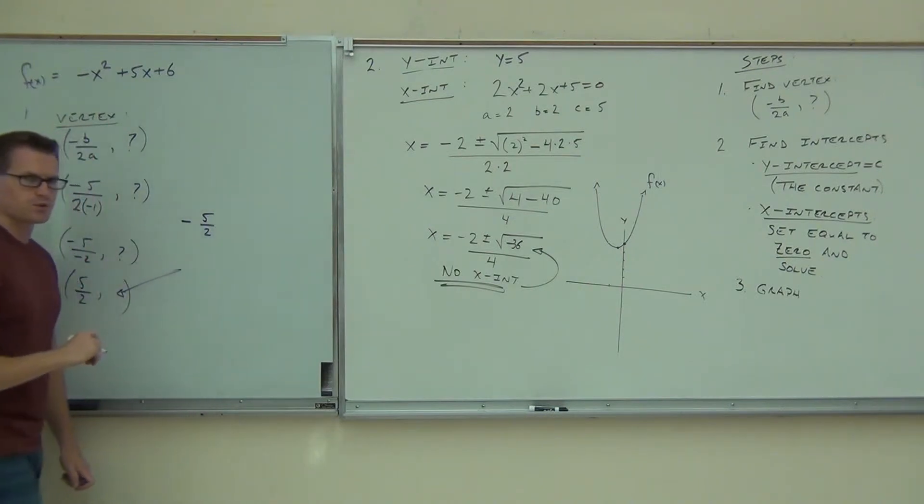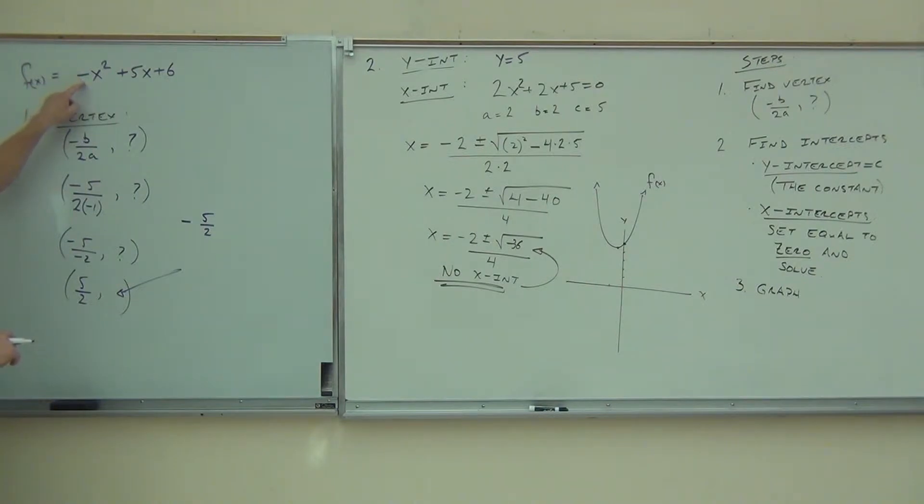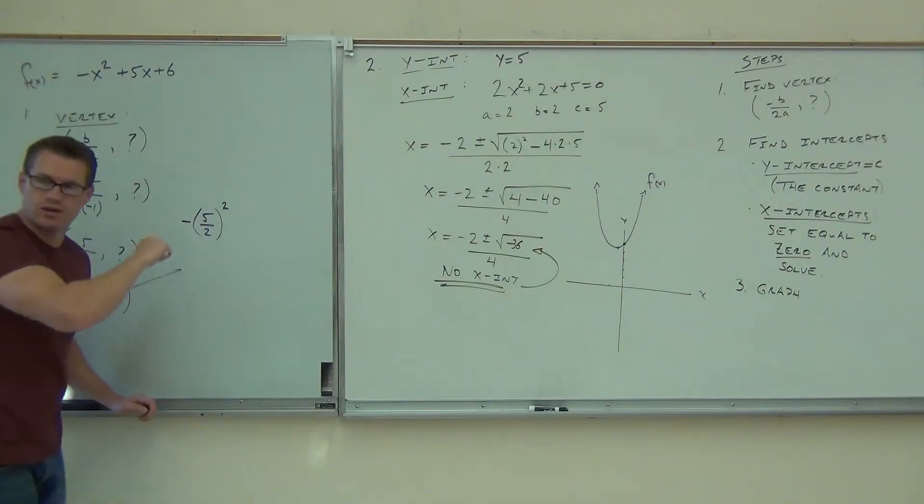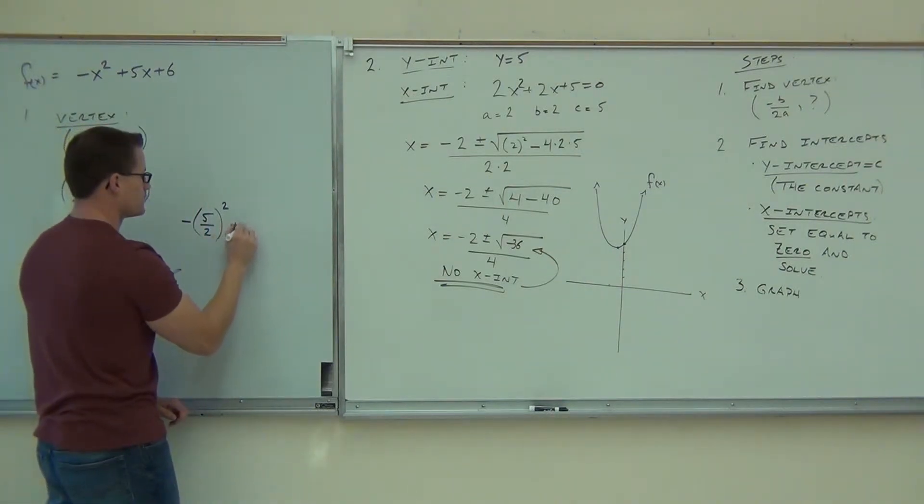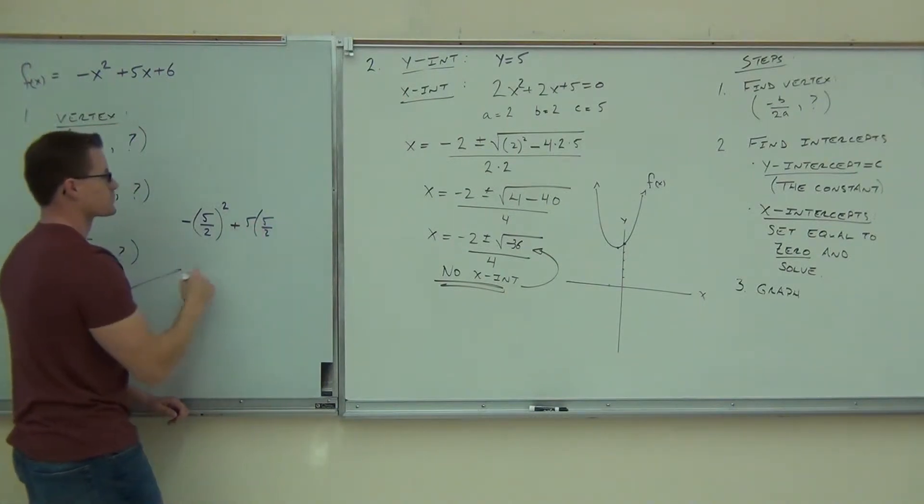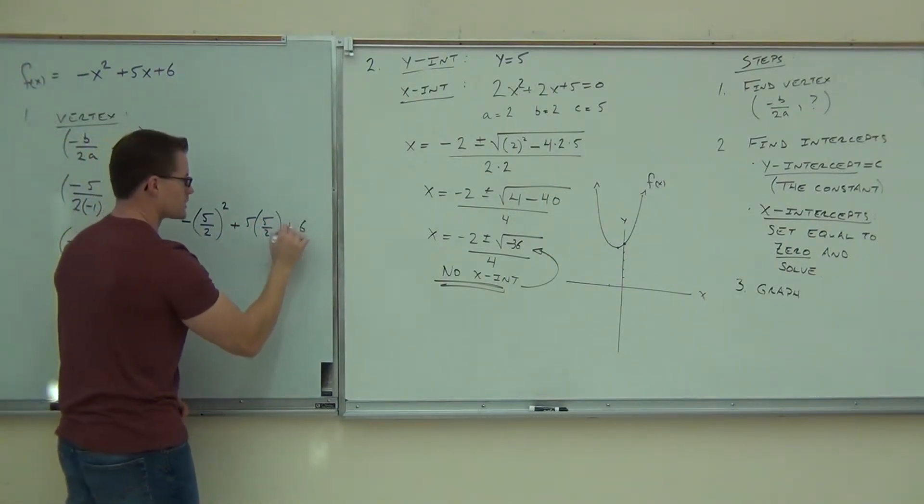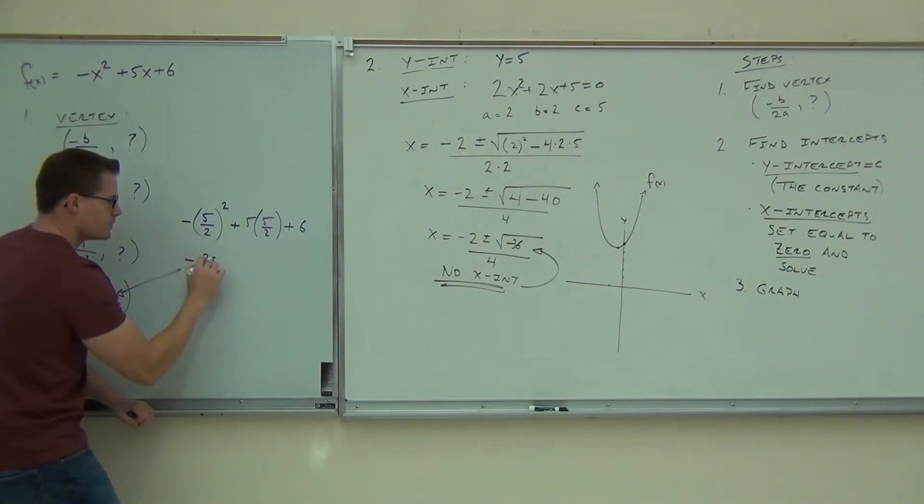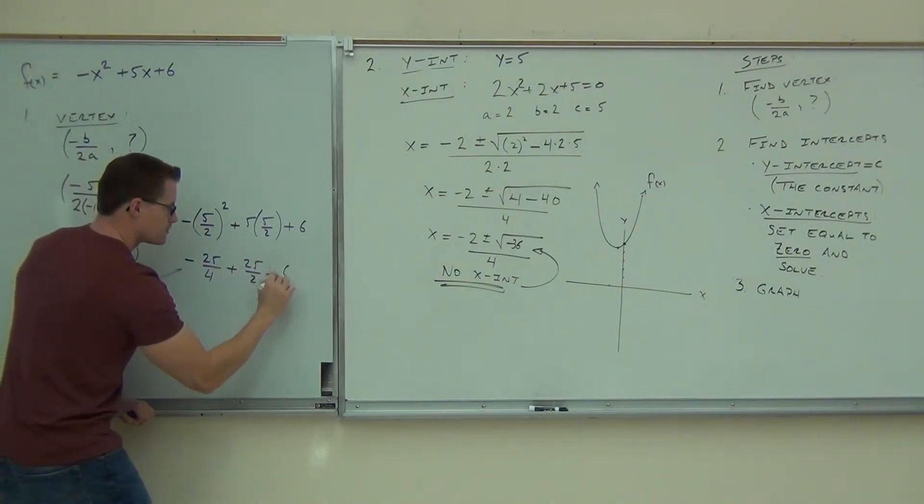Just one little note here when you're doing this. Please watch carefully on the board. That negative is not being applied to that square. So what happens is you're going to have negative like that five halves squared. Do you see the difference? So this is going to be a negative number when you're done, not a positive because you're not squaring the negative. Plus five times five halves plus six.